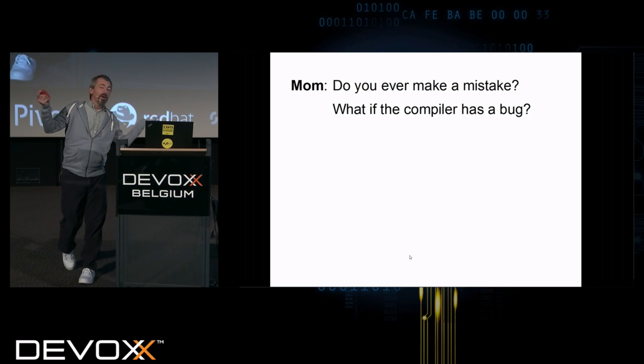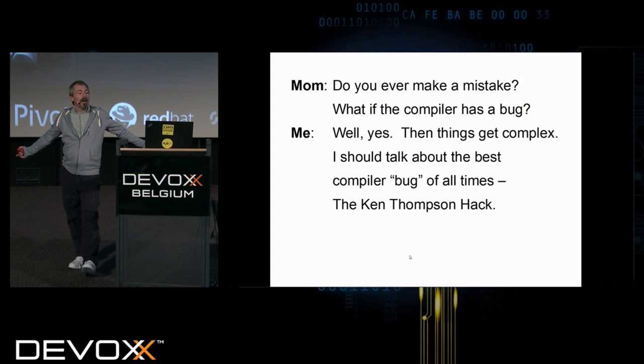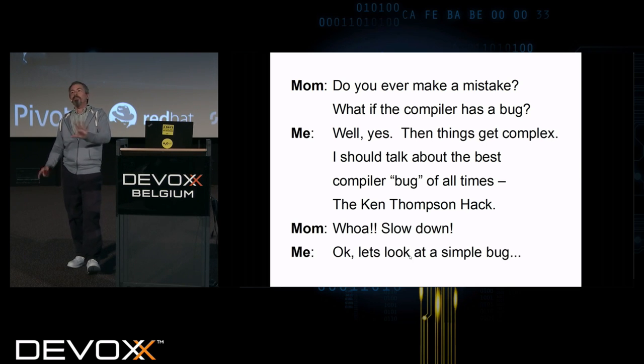Did you ever make a mistake? What if a compiler has a bug? Yes, then things get complex. I should talk about the best compiler bug of all time, the Ken Thompson hack. Whoa, slow down. Okay, let's look at a simple compiler bug and what's it do?